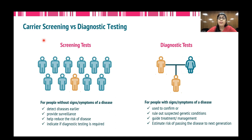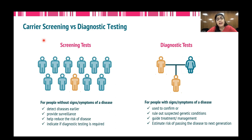Screening tests are intended for people or populations in general who do not show any signs or symptoms of disease, whereas in case of diagnostic testing, testing is done for people who show signs and symptoms of disease. Screening tests help to detect diseases earlier and provide surveillance, reduce the risk of disease, and indicate if diagnostic testing is required. For example, a complete blood cell count test: by looking at the report, one knows if the blood cell counts are normal. If there are abnormal counts for any particular blood cell type, one may need to go for a specific diagnostic test. Basically, CBC tests act as a screening test to check overall health.